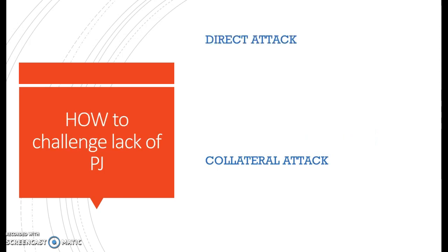There are basically two ways called direct versus collateral attack. A direct attack is when you're sued and in that lawsuit you directly challenge whether or not the plaintiff can sue you in that forum. Usually you have to raise this at the beginning of the lawsuit. If you lose that argument, you have to keep going and litigate on the merits unless there's some other procedural basis. Generally, you don't get to immediately appeal — you just have to keep going.